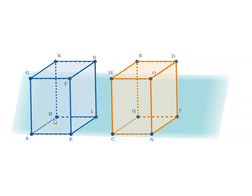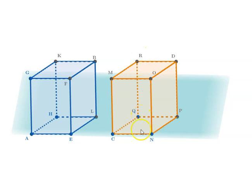Let us look at Proposition 34 of Book 11 of Euclid's Elements. The proposition says: in equal parallel bipedal solids, the bases are reciprocally proportional to the heights; and those parallel bipedal solids in which the bases are reciprocally proportional to heights are equal. Reciprocally proportional basically means that if two solids are equal (their volumes are equal), then if the base of CD increases the height will reduce, and if the base is reduced the height will increase — to maintain the equality of the solids.